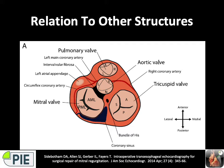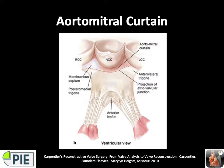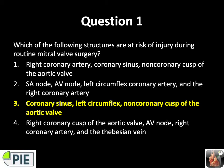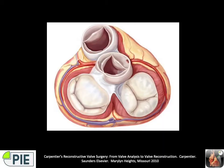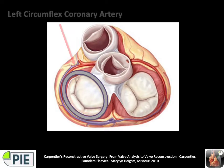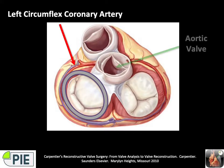The area between the aortic valve and the mitral valve is called the intervalvular fibrosa, which is the common fibrous structure. The answer to question one is the coronary sinus, left circumflex, and non-coronary cusp of the aortic valve. This illustrates the proximity of the left coronary cusp, the aortic valve, and the coronary sinus — especially when placing a ring.